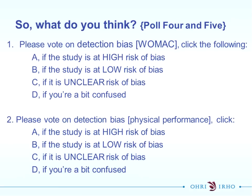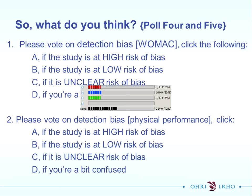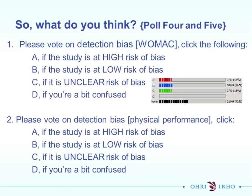It's time for two more polls on detection bias, broken up by outcomes. The WOMAC score is self-reported and fairly subjective - do you think this is high, low, or unclear risk of bias? There's quite a split - very evenly split between high, low, and unclear for the WOMAC scores. What about for the physical performance, the more objective scores? Don't forget to think about who is the outcome assessor and whether the outcomes are objective or subjective.